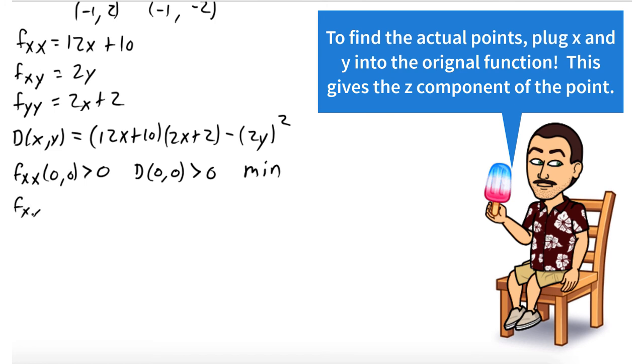Now we'll just check all of our points. fxx(-5/3, 0) is negative. And D at that point is positive. So we have a max.